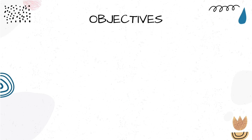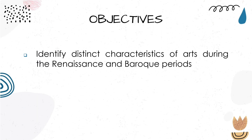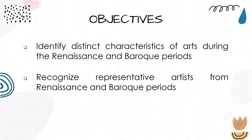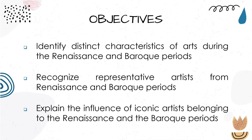For this lesson, our objectives are the following. First, identify distinct characteristics of arts during the Renaissance and Baroque periods. Second, recognize representative artists from Renaissance and Baroque periods. And third, explain the influence of iconic artists belonging to the Renaissance and the Baroque periods.